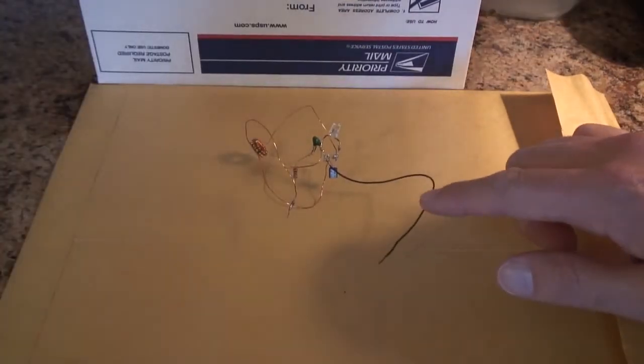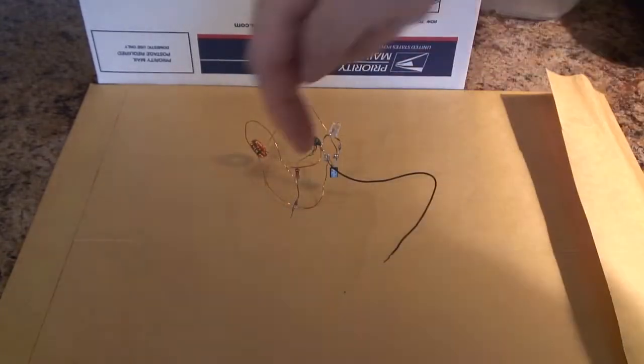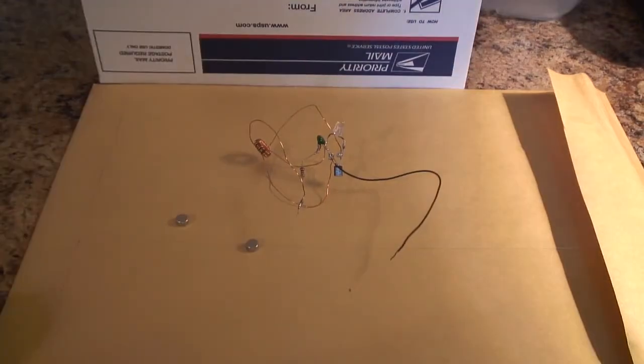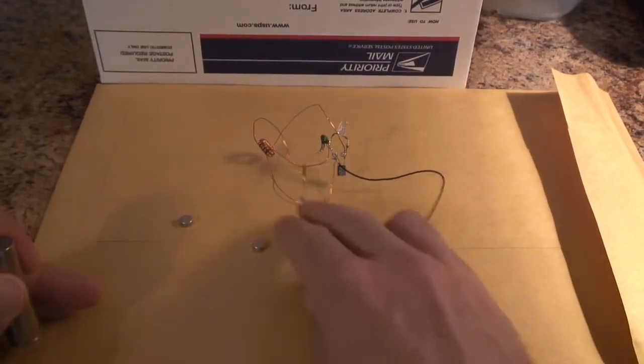The black wire is the negative terminal, and the copper wire on this side is the positive terminal. A couple of magnets to go with it, these are neodymium magnets.